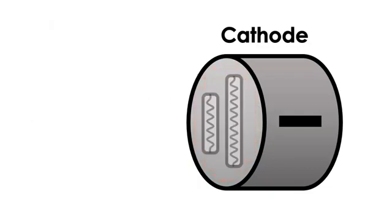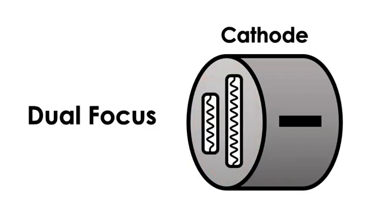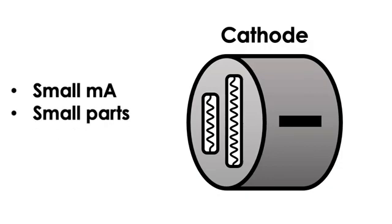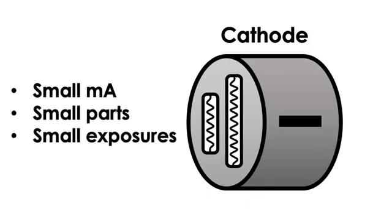Many x-ray tubes actually have two cathode filaments. These are called dual focus tubes. The word dual just means two. The small filament is one centimeter long and the large filament is two centimeters long. The small filament is used for small mA only. It cannot tolerate large mA because it has a small heat capacity. It would get too hot and possibly break. The small filament should be used only for small body parts because it can only be used for small exposures.